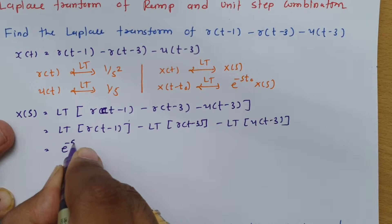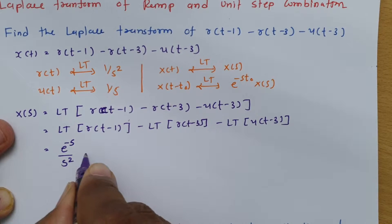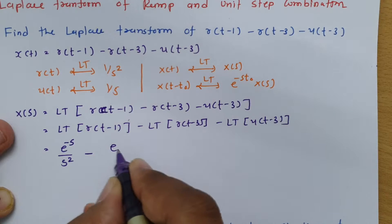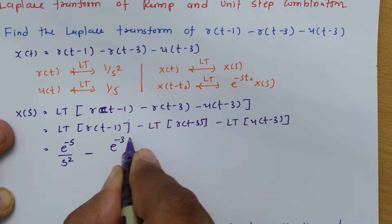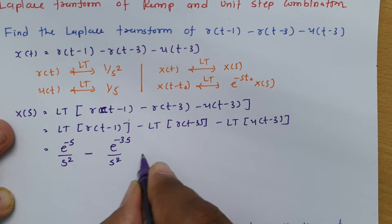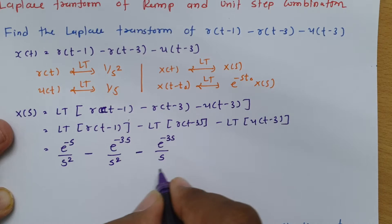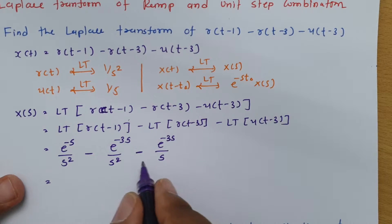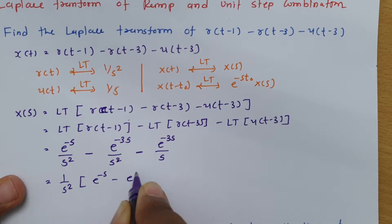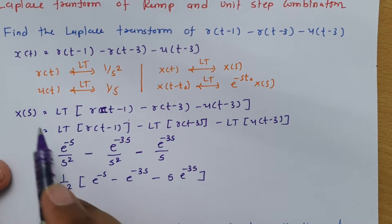For r(t-3), the Laplace transform is e^(-3s)/s². For u(t-3), the unit step has Laplace transform 1/s and the shift gives e^(-3s)/s. Taking 1/s² as common, the simplified result is: [e^(-s) - e^(-3s) - s·e^(-3s)] / s². This is the Laplace transform of the given signal.